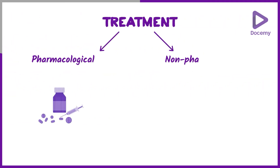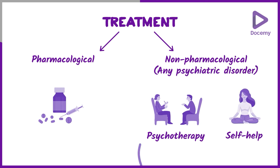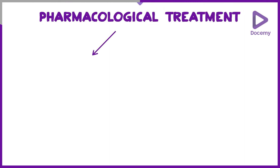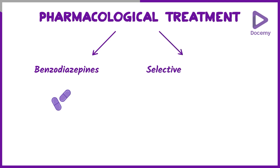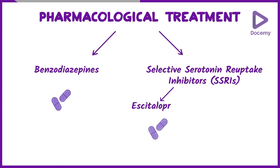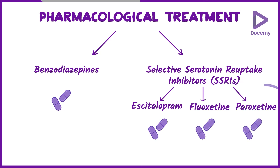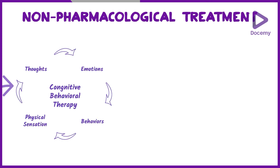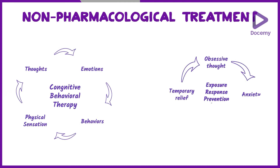The treatment can be divided into pharmacological and non-pharmacological, like any other psychiatric disorders. For pharmacological treatment, it is mainly benzodiazepines and selective serotonin reuptake inhibitors like escitalopram, fluoxetine, or paroxetine. For non-pharmacological treatment, we give cognitive behavioral therapy and exposure response prevention therapies.